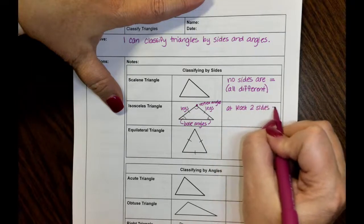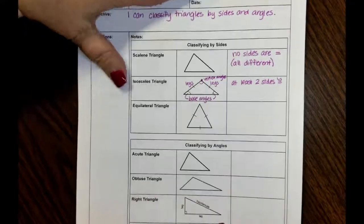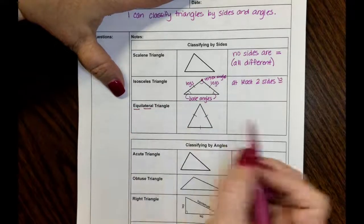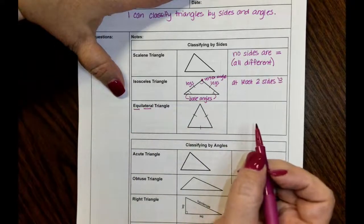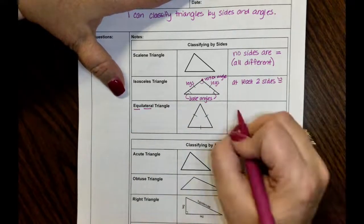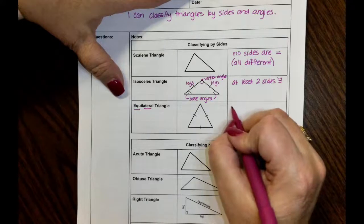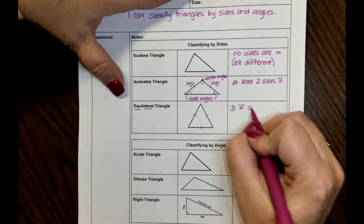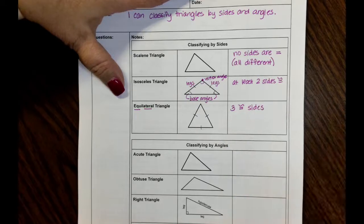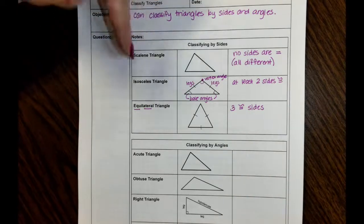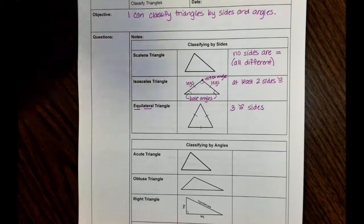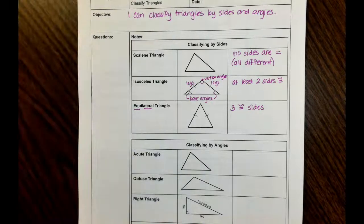In an isosceles triangle you have at least two sides congruent. An equilateral triangle — equi means equal, lateral means sides — so equal sides. It has three congruent sides, three sides that are equal to each other. An equilateral triangle is considered isosceles, but it's a special isosceles triangle, so we call it equilateral and not isosceles.